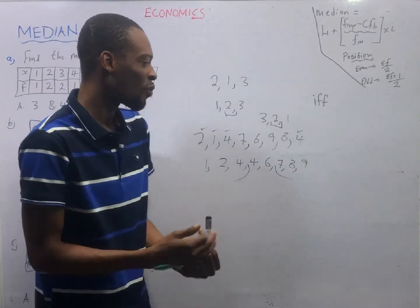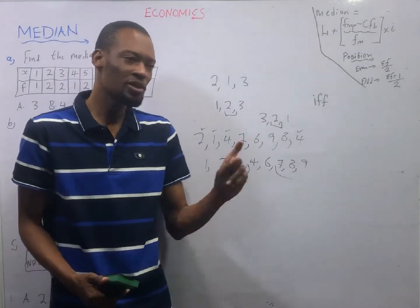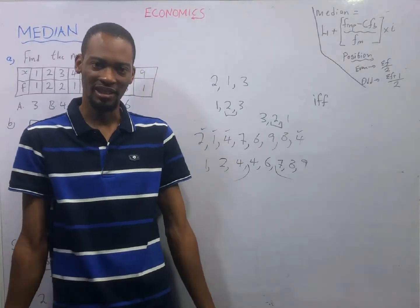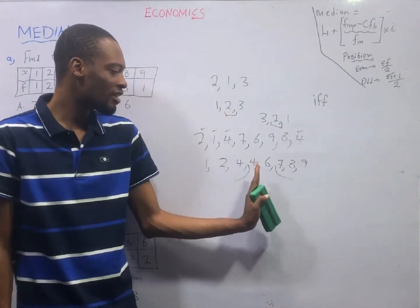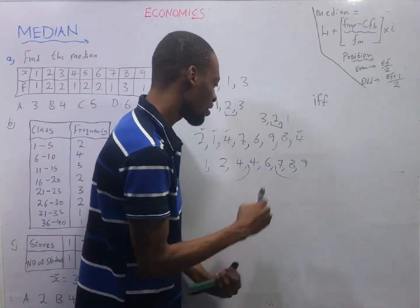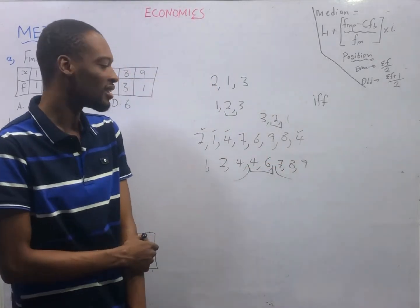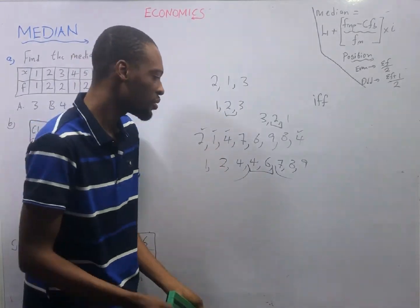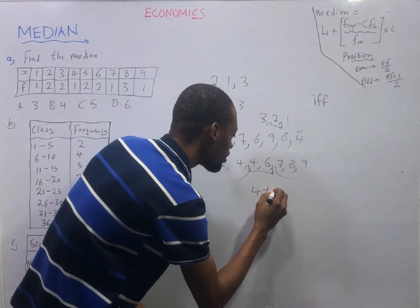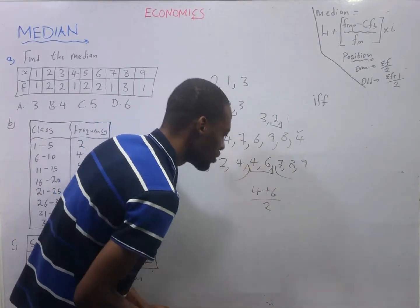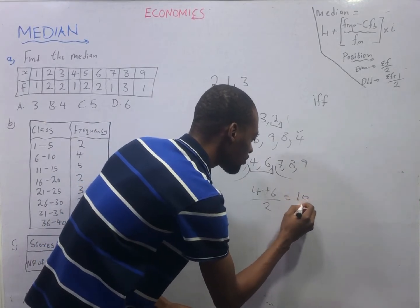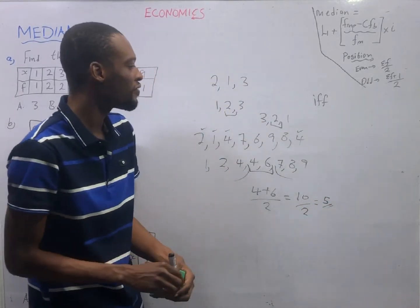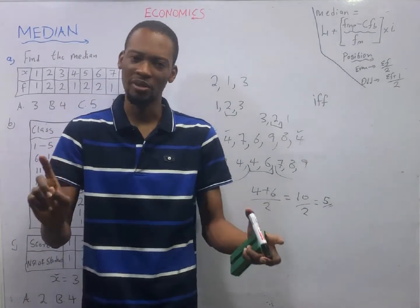This time around we are not lucky because there is no single number at the middle. However, when you remove numbers from this side and from this side, you have two numbers left at the middle. To find the median you simply look for the average of the two numbers - the mean of the two numbers. We add four plus six and divide by two because there are two numbers. Four plus six is ten, divided by two, that is five. So the median is five.